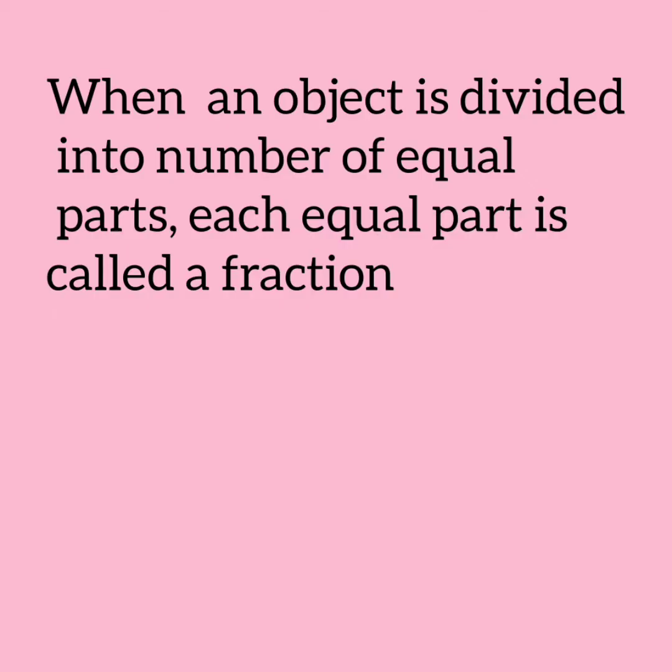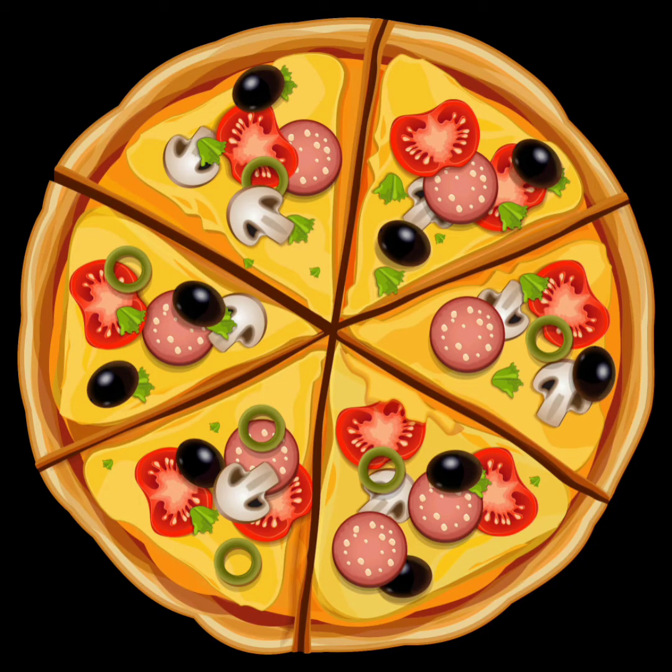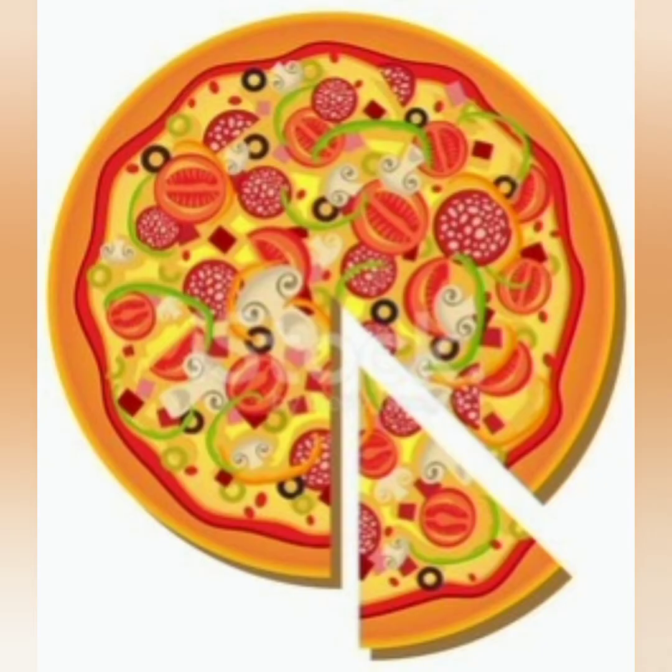When an object is divided into a number of equal parts, each equal part is called a fraction. Fraction is a part of a whole. That means fraction will be the smaller portion of the whole big object.